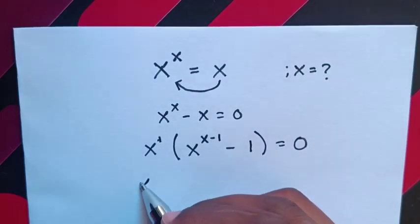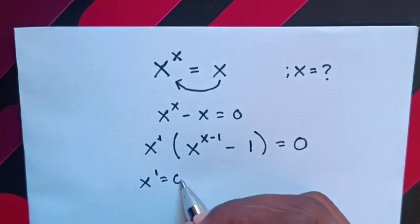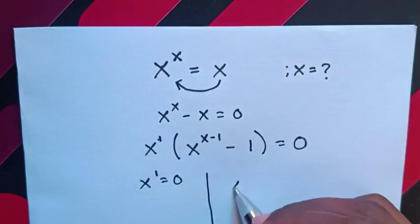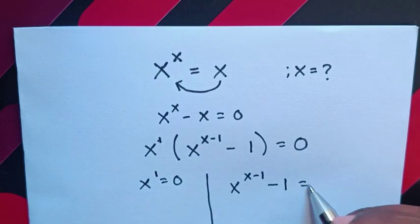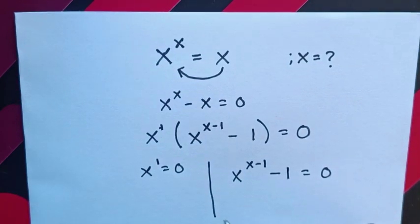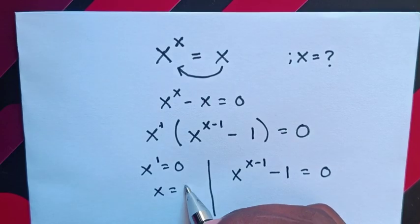x is equal to 0, and x^(x-1) - 1 = 0. Then here x = 0.